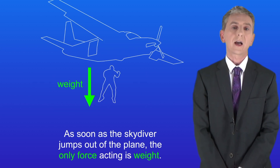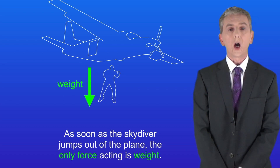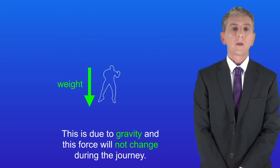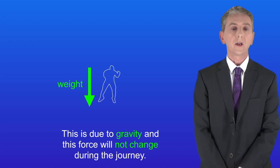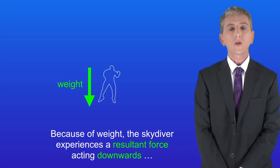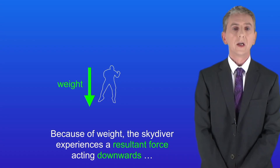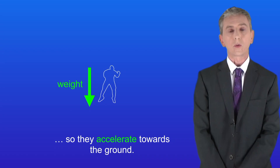As soon as the skydiver jumps out of the plane the only force acting is weight. This is due to gravity and you need to remember that this force will not change during the journey. Because of weight, the skydiver experiences a resultant force acting downwards, so they accelerate towards the ground.